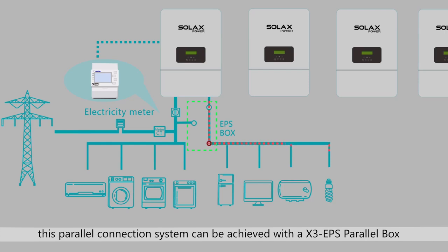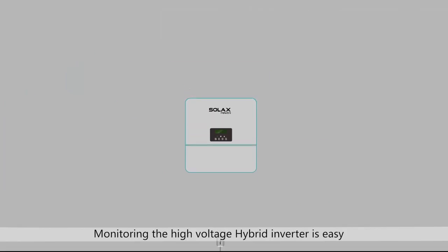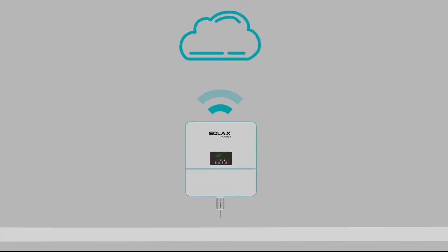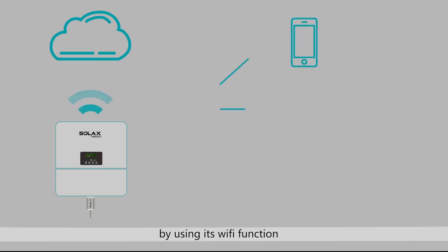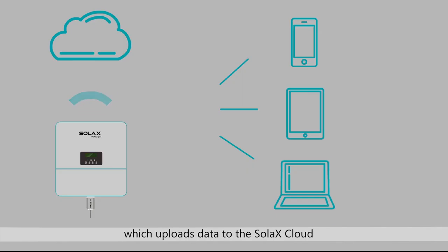this parallel connection system can be achieved with a X3 EPS parallel box. Monitoring the High Voltage Hybrid inverter is easy by using its Wi-Fi function, which uploads data to the Xcloud, and is accessible via the web or smartphone app in real-time.